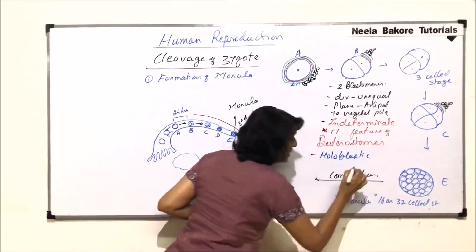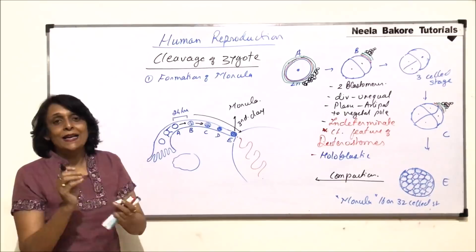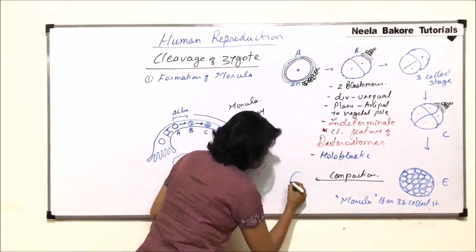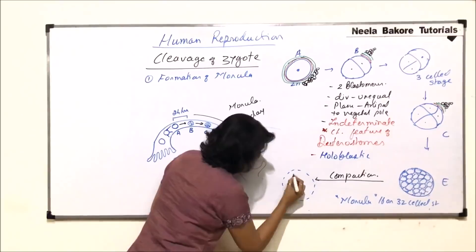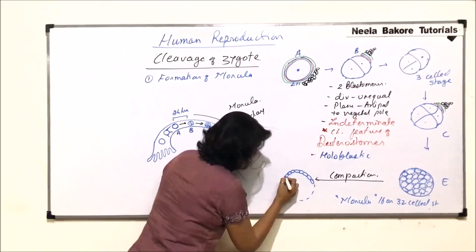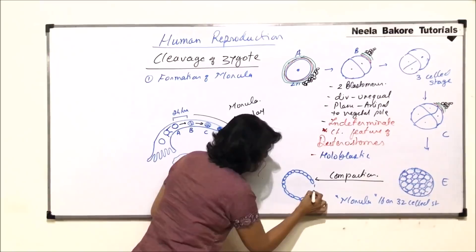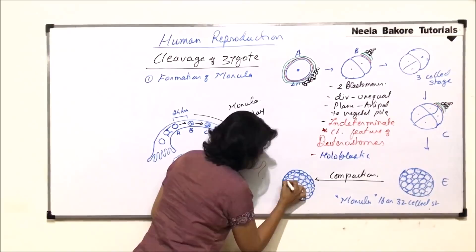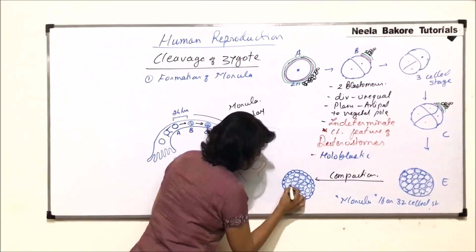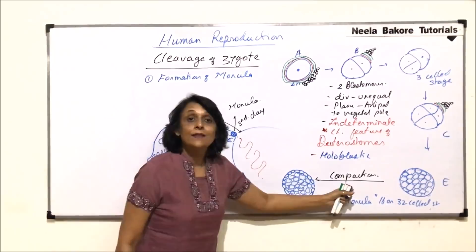In compaction, the smaller blastomeres become the peripheral part and the larger cells make the inner part. The outer cells are the smaller blastomeres, and the inner ones are the larger ones. In the inner part it is still solid, and there are bigger cells on the inner side. So there is a rearrangement of cells which has taken place — this is known as compaction.